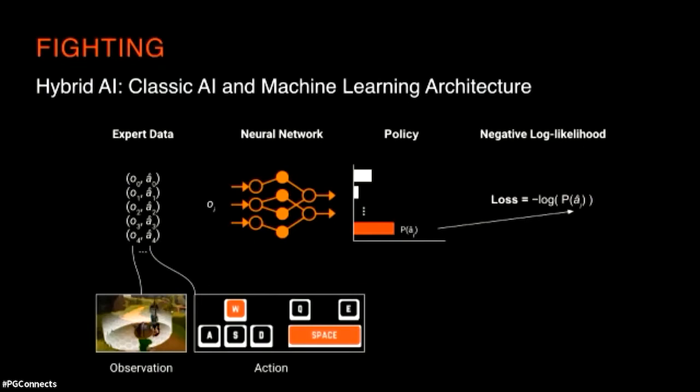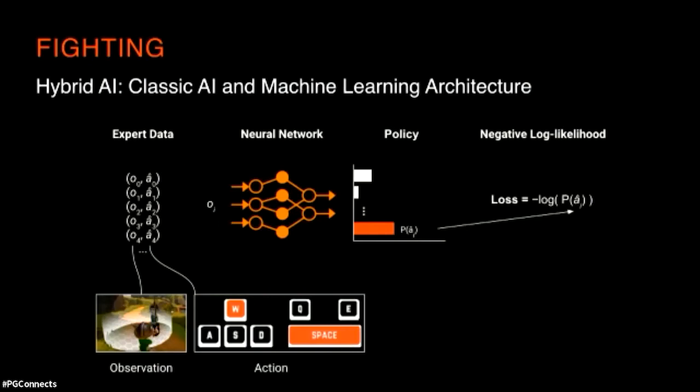The specific machine learning technique we used was imitation learning, also called behavioral cloning. It's a way of teaching a neural network to look at a situation, observe the actions a player takes, and then learn: next time I'm in a situation like this, what would a player do? What would a group of players do based on what I've seen before? That's the core idea of behavioral cloning — learning to imitate human behavior from observed examples.